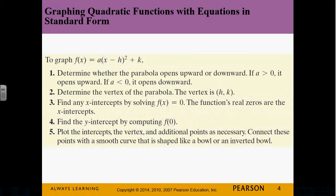If we want to graph a parabola, we know a — whether it's going up or going down — and we know h and k, so we know the vertex. But we need to know some other points to figure out how wide it is. We can determine these by finding the x-intercepts and y-intercepts. Just like with linear equations, you can find the x-intercept by setting the equation equal to zero. Set f(x) equal to zero and you get the x-intercept. There should only be one y-intercept because it's a function. Then when we plot all these points on a nice curve, it gives us our parabola.